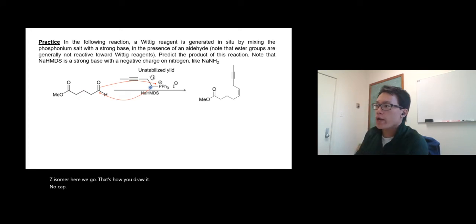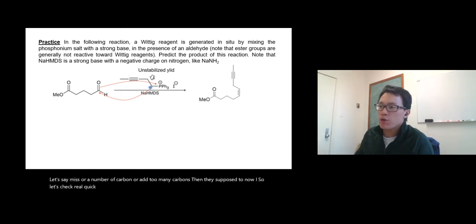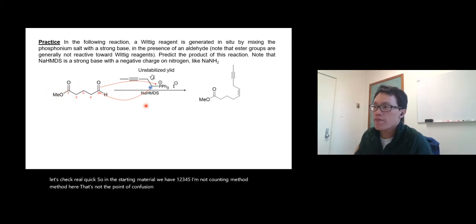All right, check real quick. In my experience, students usually miss or have a number of carbons, or add too many carbons than they're supposed to. Let's check real quick. In the starting material we have one, two, three, four, five—I'm not counting the metal, that's not the point of confusion.